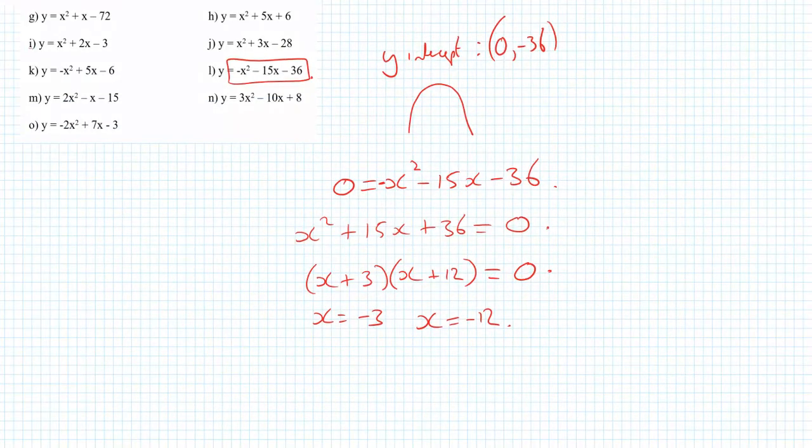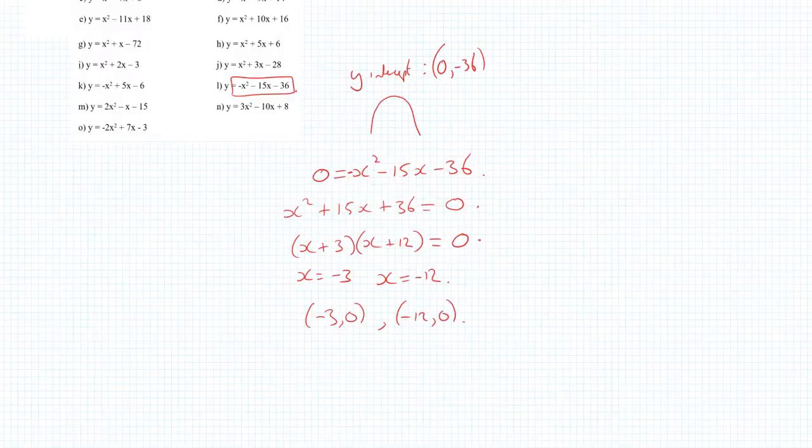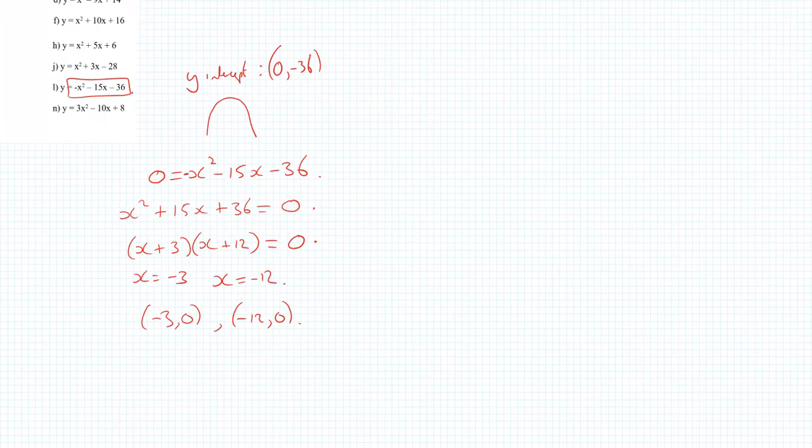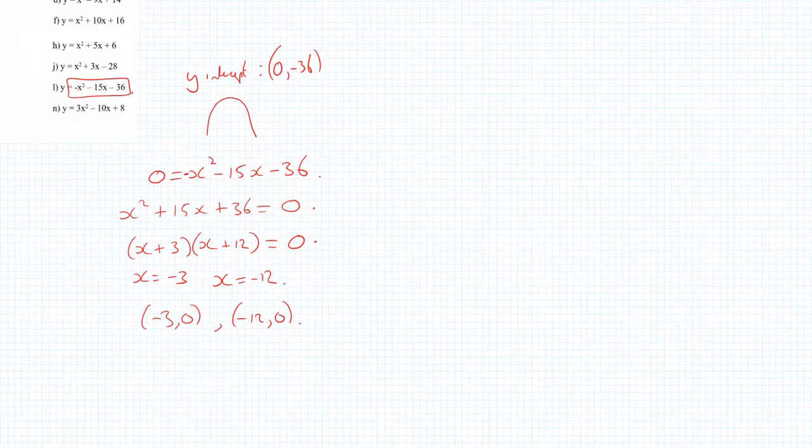So I've got my x intercepts. They are going to be at minus 3, 0 and minus 12, 0. So now I have everything I need to draw this out.